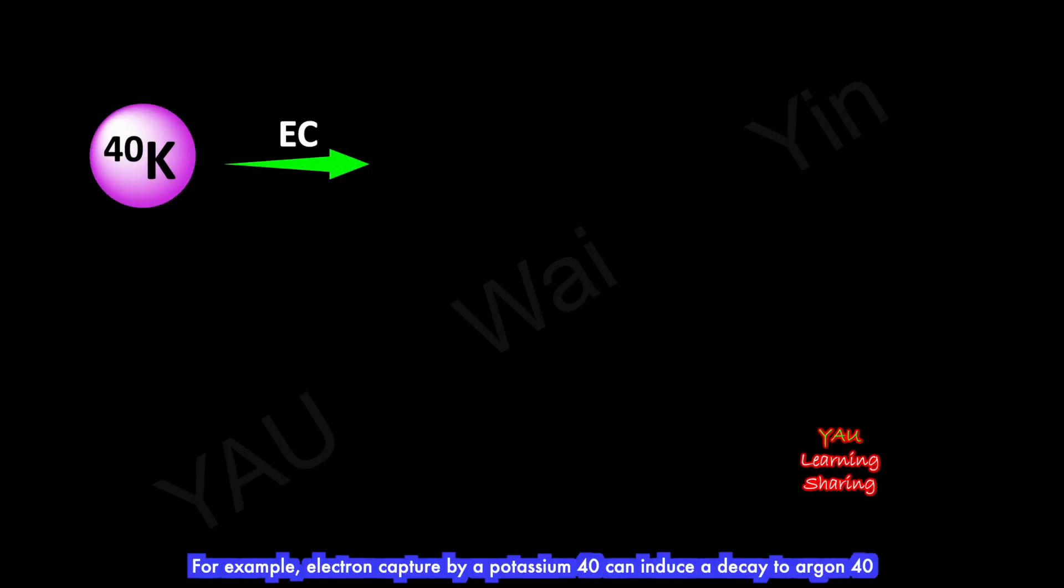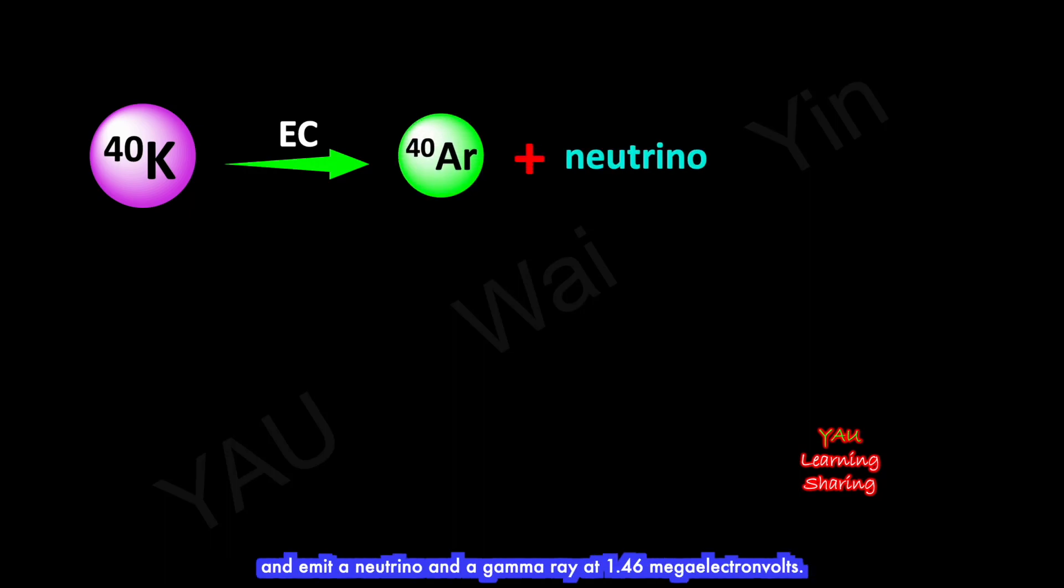On Earth, gamma-rays can be generated from radioactive decay of radioactive isotopes. For example, electron capture by potassium-40 can induce decay to argon-40 and emit a neutrino and a gamma-ray at 1.46 megaelectronvolts.